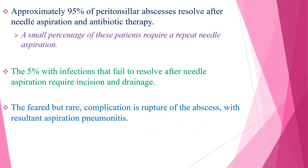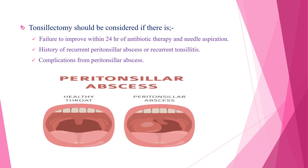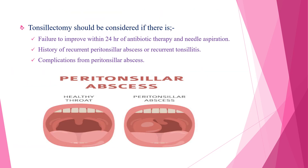The feared but rare complication is rupture of the abscess with resultant aspiration pneumonitis. There is a 10% recurrence risk for peritonsillar abscess. Tonsillectomy should be considered if there is failure to improve within 24 hours of antibiotic therapy and needle aspiration, history of recurrent peritonsillar abscess or recurrent tonsillitis, or complications from peritonsillar abscess.